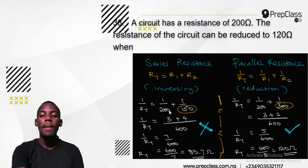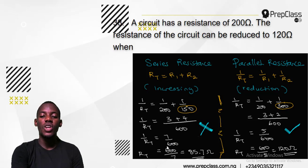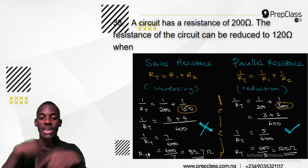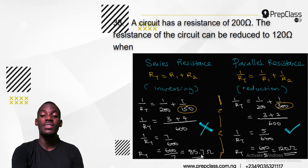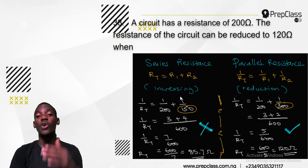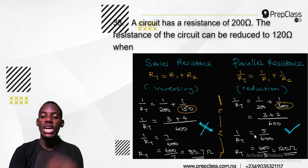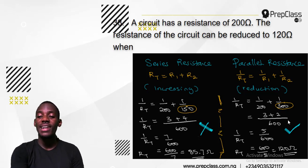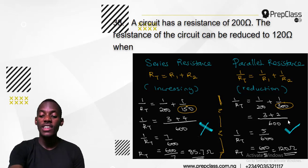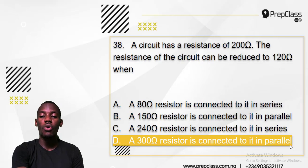Working with one over 200 plus one over 300: the LCM is 600. 600 over 200 is 3, and 600 over 300 is 2. That gives 5 over 600. Inverted, that is 600 over 5, which equals 120. That means the answer that gives 120 by parallel reduction is option D, and option D is the correct answer to that question.